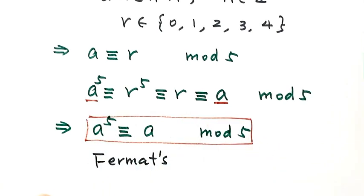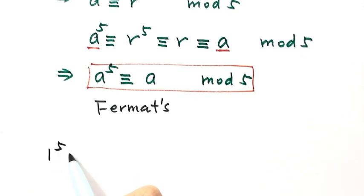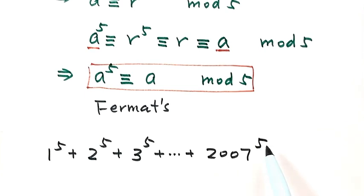So now let's see, so this is our question: 1 to the power of 5 plus 2 to the power of 5 plus 3 to the power of 5 and so on up to 2007 to the power of 5.